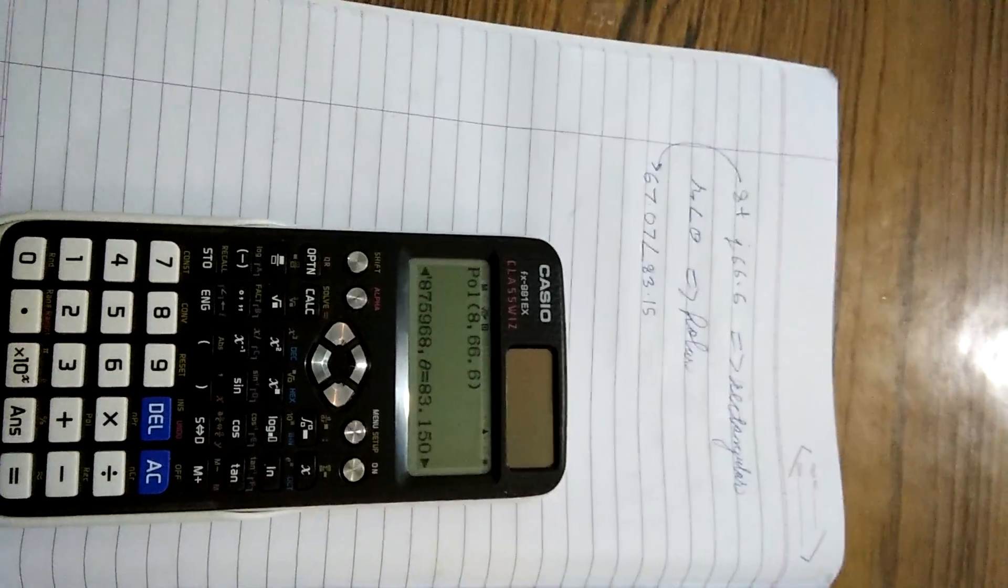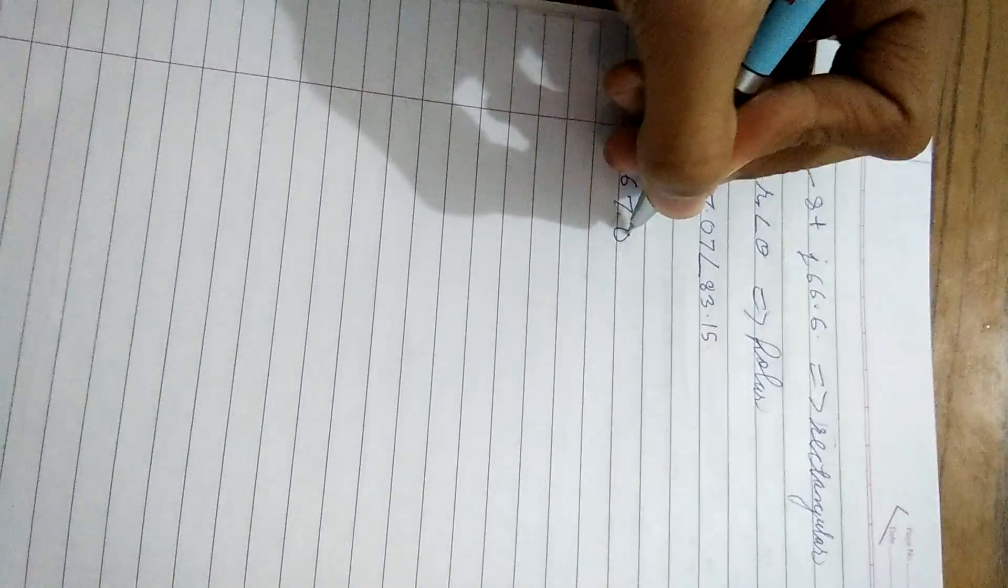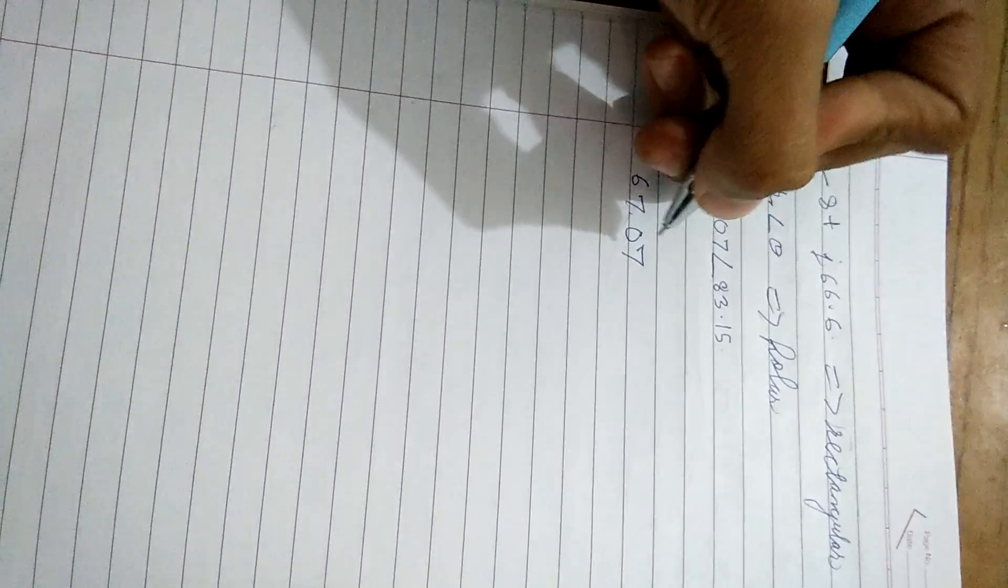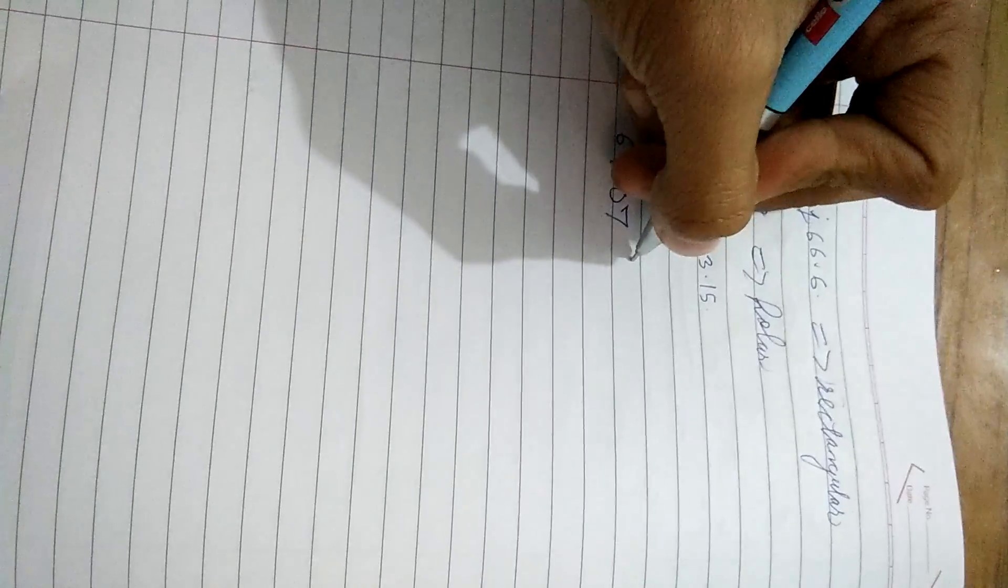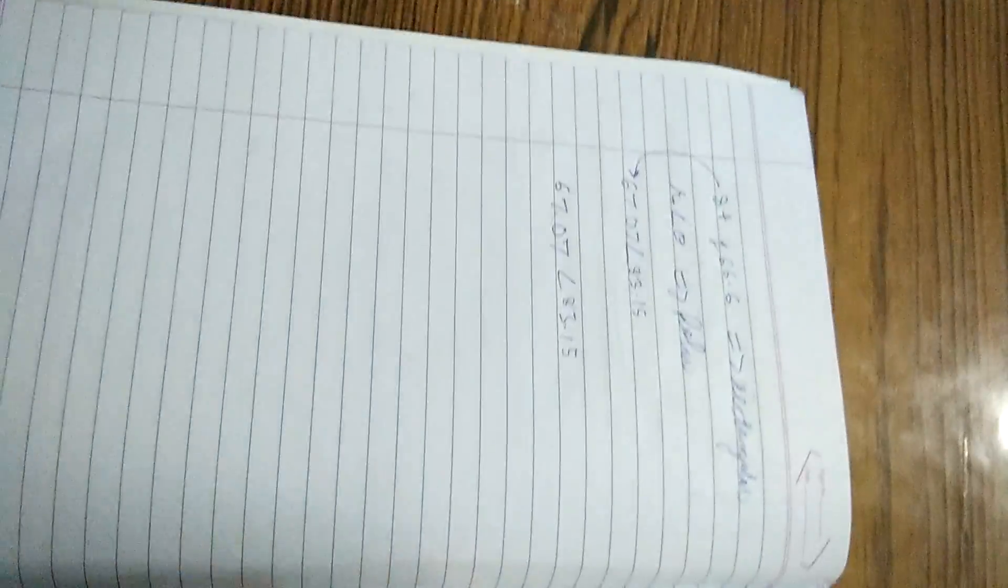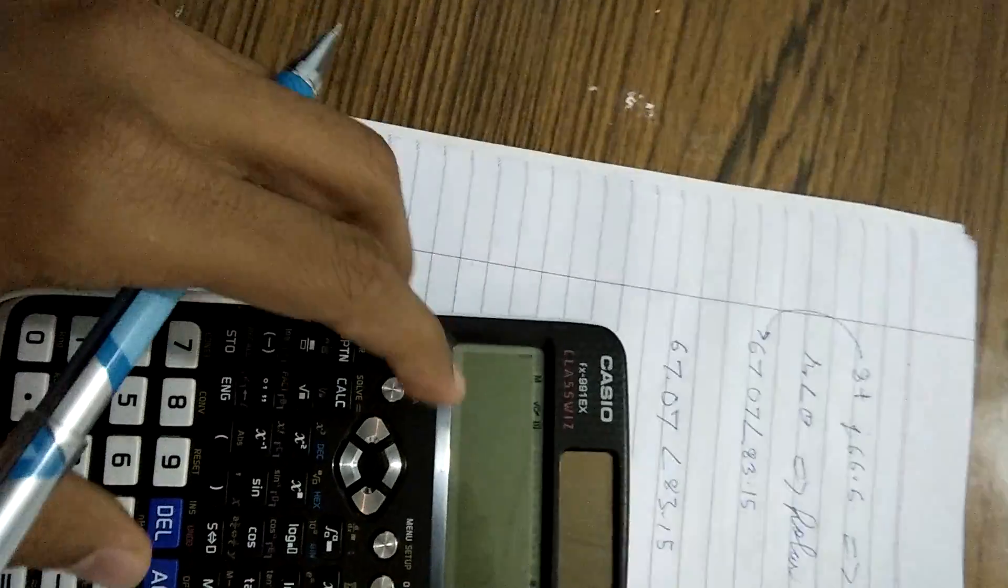Now if we want to convert polar form to rectangular form, for example we have the same thing as a polar form: 67 angle 83.15, and we need to convert this into rectangular form.